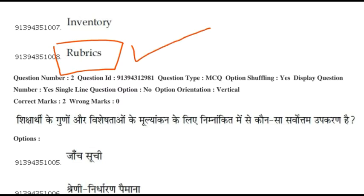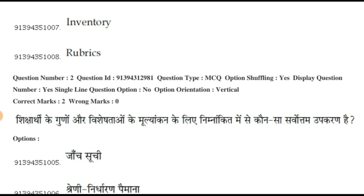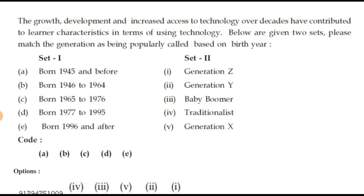The next question discusses how growth, development, and increased access to technology over decades have contributed to learner characteristics in terms of using technology. Two sets are given asking to match generations as popularly called based on birth year.